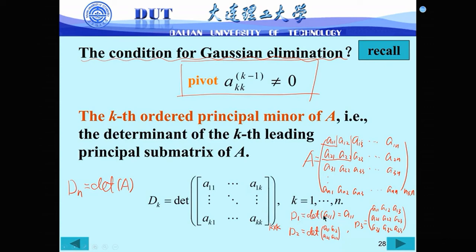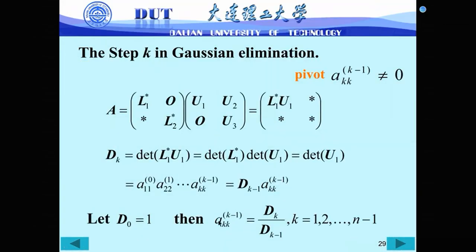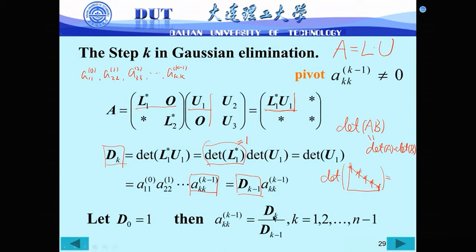If we let D₀ = 1, then the pivot Aₖₖ⁽ᵏ⁻¹⁾ = Dₖ / Dₖ₋₁. This is the ratio between Dₖ and Dₖ₋₁. So D₁ = det(A₁₁), D₂ = determinant of the 2×2 submatrix, D₃, …, Dₙ = det(A). This requires knowledge of determinants and leading principal minors.